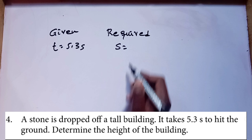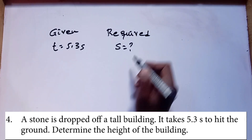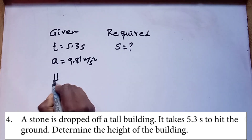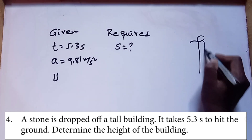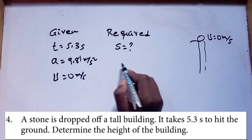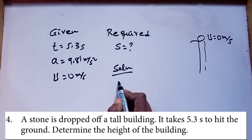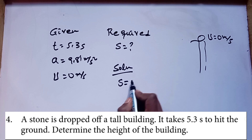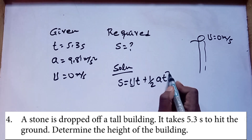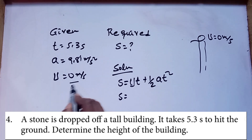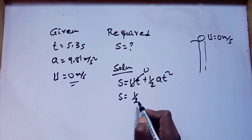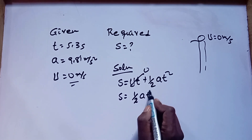The acceleration due to gravity is 9.81 m/s². Initial velocity is 0.0 m/s since the stone is dropped. Using equation 3: displacement is equal to initial velocity times time plus 1 over 2 times acceleration times time squared.